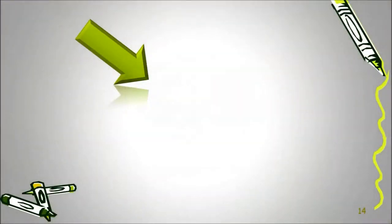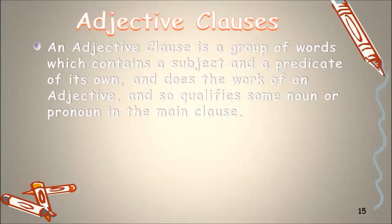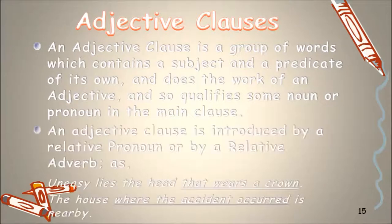Today we are going to discuss about adjective clauses, also known as relative clauses. An adjective clause is a group of words which contains a subject and a predicate of its own, does the work of an adjective, and qualifies some noun or pronoun in the main clause. An adjective clause is introduced by a relative pronoun.